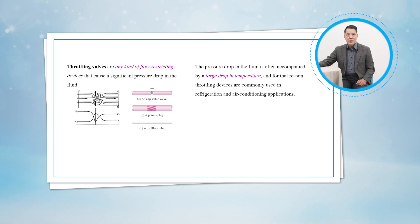The pressure drop in the fluid is often accompanied by a large drop in temperature, and for that reason, throttling devices are commonly used in refrigeration and air conditioning applications.